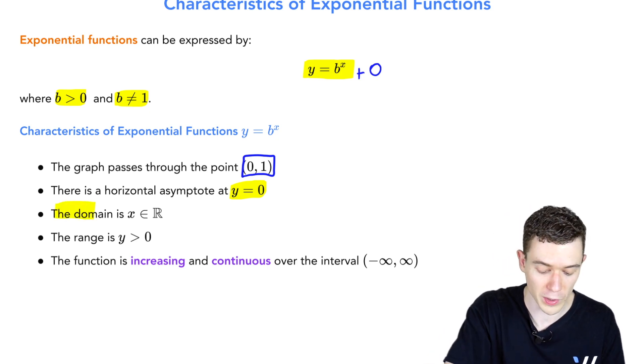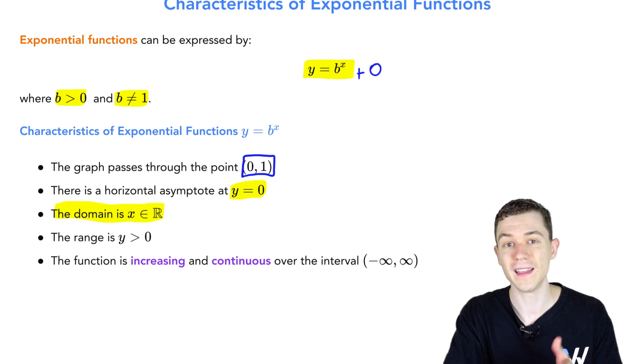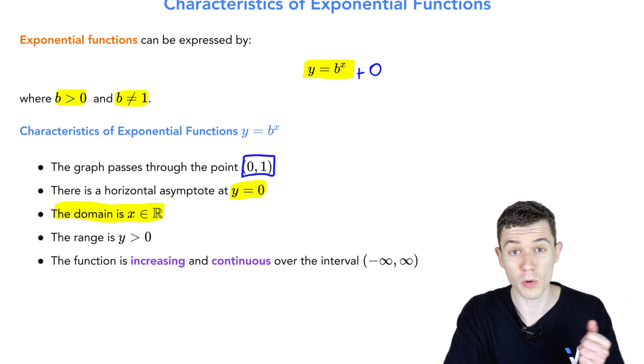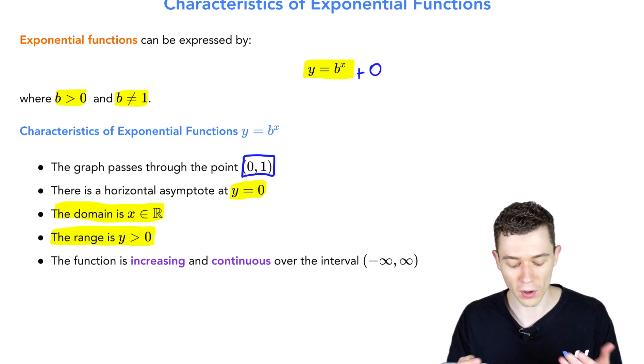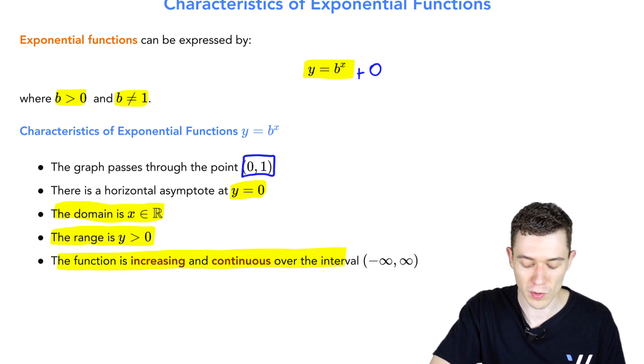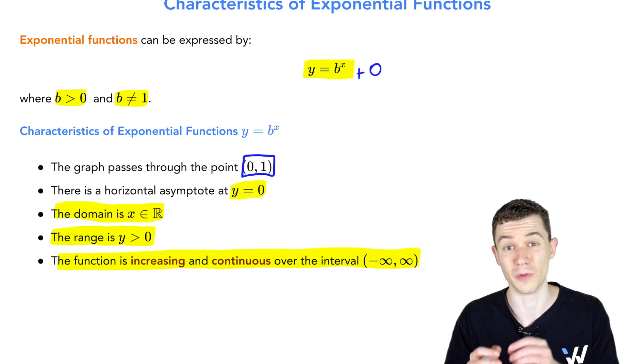The domain is all real numbers. We can plug in anything we want, and this function lives above that horizontal asymptote, so the range is y greater than 0. It's always increasing and continuous over its entire domain, the real numbers.